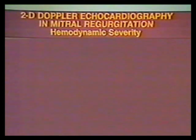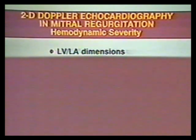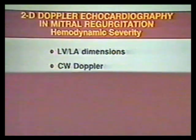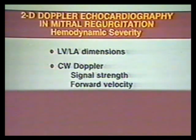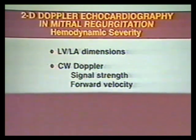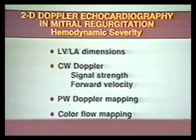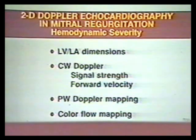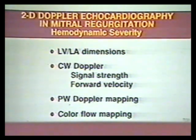The hemodynamic severity is determined from measurement of the left ventricle and left atrium, from continuous wave Doppler via assessment of signal strength and forward velocity, from pulsed wave Doppler mapping, and from color flow mapping. We will now discuss this approach to assessing hemodynamic severity, and various etiologies will be illustrated throughout.